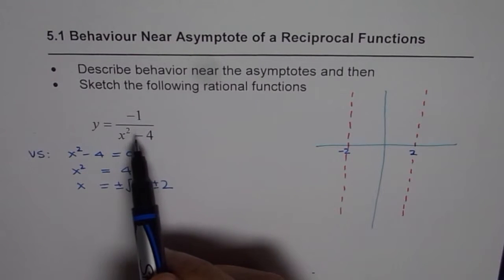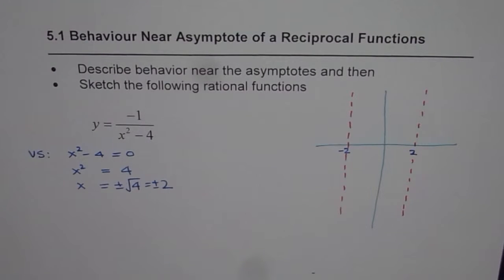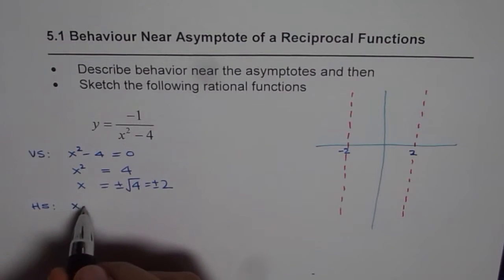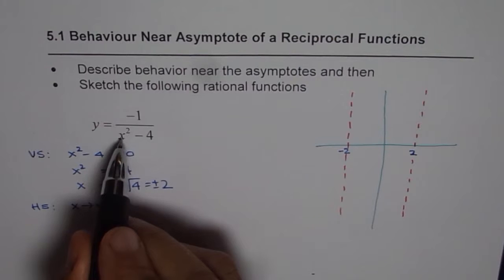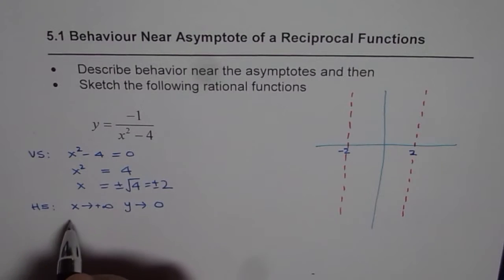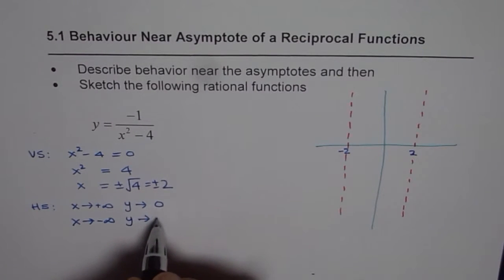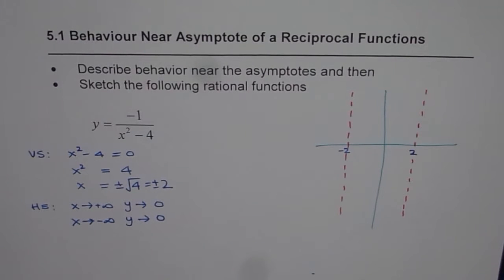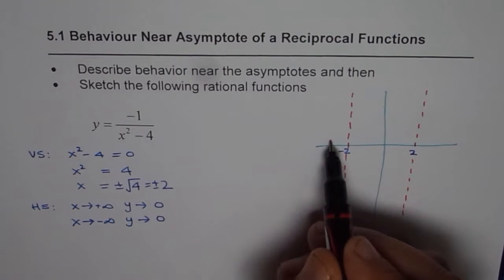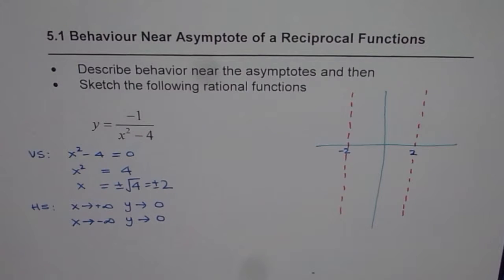Since it is a reciprocal function, we know the horizontal asymptote is the x-axis, y equals 0. When x approaches a large positive value, the denominator is very large, so the function yields a small number approaching 0. Similarly, when x approaches negative infinity, y approaches 0 again. The question is: are we approaching 0 from the positive side or the negative side?